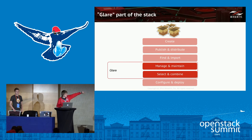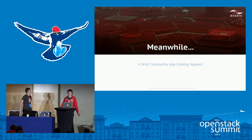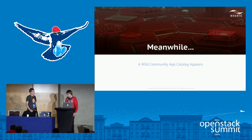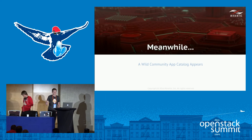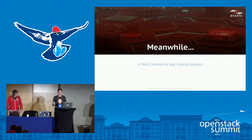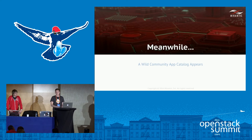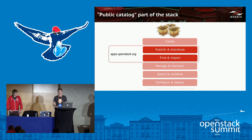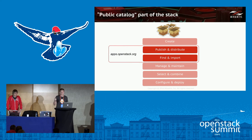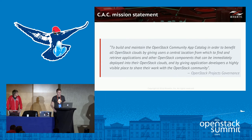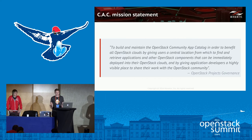What about the upper two blocks? Those were not covered before the Vancouver Summit. Then another project appeared. Winding back to Vancouver Summit, apps.openstack.org was presented there. The ultimate goal of the project was and is to have a single entry point — a single place to discover all things that run on OpenStack. From the catalog user perspective, this fulfills the publish, distribute, and find-and-import part of the app lifecycle workflow.